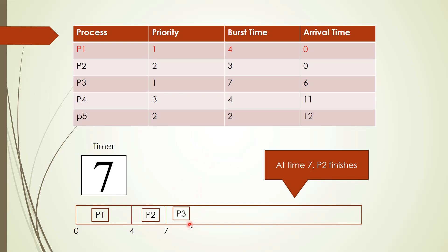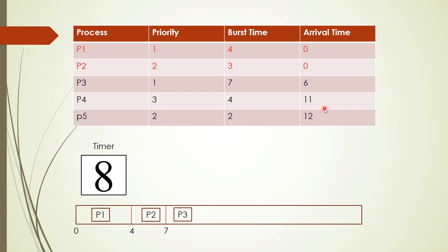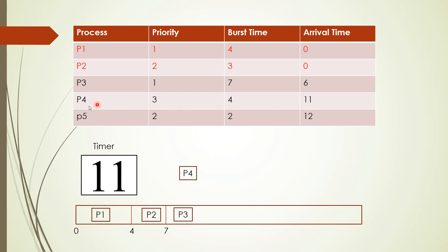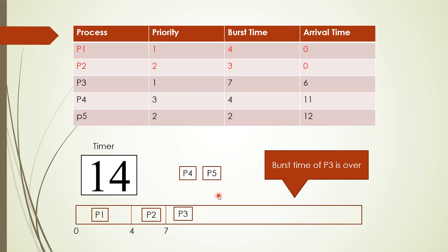P3 is then put in the CPU. Looking at the arrival time column, there is no process arriving at clock cycles 8, 9, or 10. At clock cycle 11, P4 arrives, and at clock cycle 12, P5 arrives. P3 needs 7 clock cycles to complete, starting at 7, so it will run until clock cycle 14. P3 has now completed its execution.